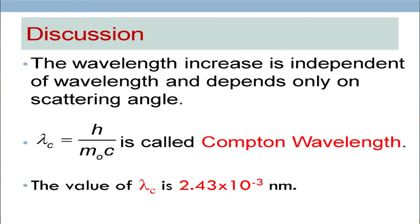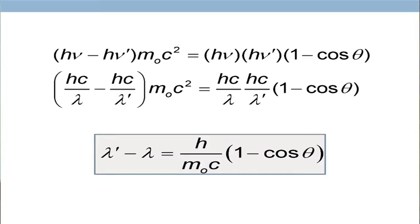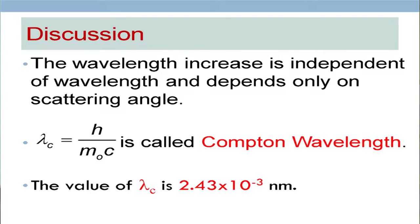The first thing we realize is that the wavelength increase is independent of wavelength and depends only on the scattering angle. This increase does not depend on lambda — it depends only on theta. h, m0, and c are fundamental constants. Lambda_c equals h over m0c — if m is the mass of the electron, this is what is called the Compton wavelength of the electron. Putting in the numbers, this turns out to be 2.43 times 10 to the power minus 3 nanometers — a fairly small value.